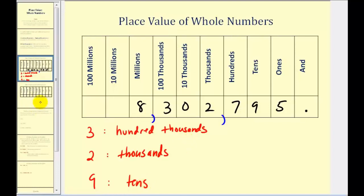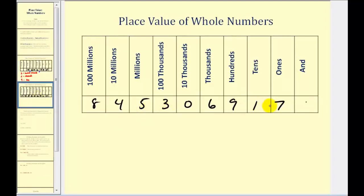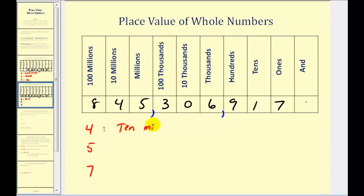Let's take a look at one more example. Let's go ahead and put the commas in to separate our place values, starting from the right, putting a comma between every three digits. So this would be eight hundred forty-five million, three hundred six thousand, nine hundred seventeen. So this four would be in the ten millions place value, the five would be in the one millions or millions place value, and the seven would be in the ones place value.